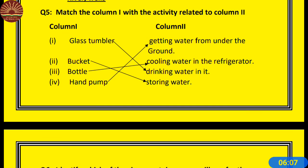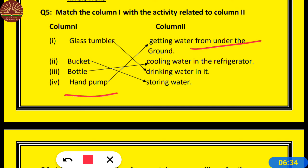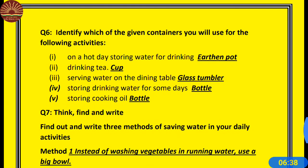Number 5: Match column one with the activity related to column two. Glass tumbler is used for drinking water. Bucket is used for storing water. Bottle is used for cooling water in the refrigerator. Hand pump is used for getting water from an underground source.